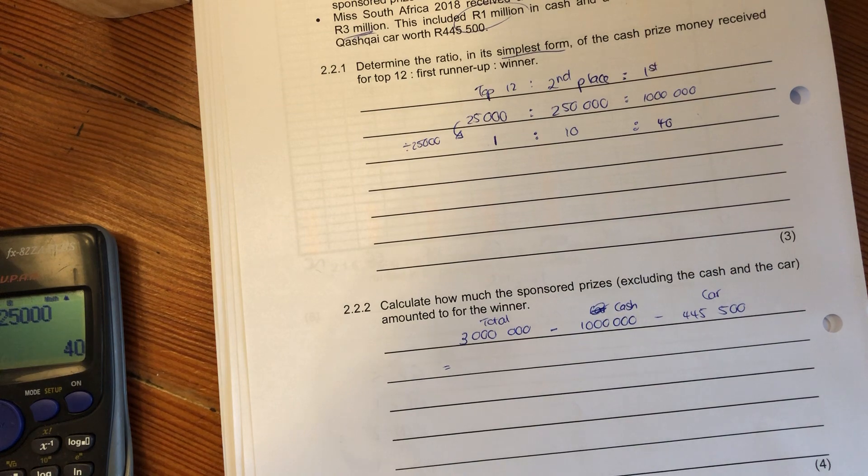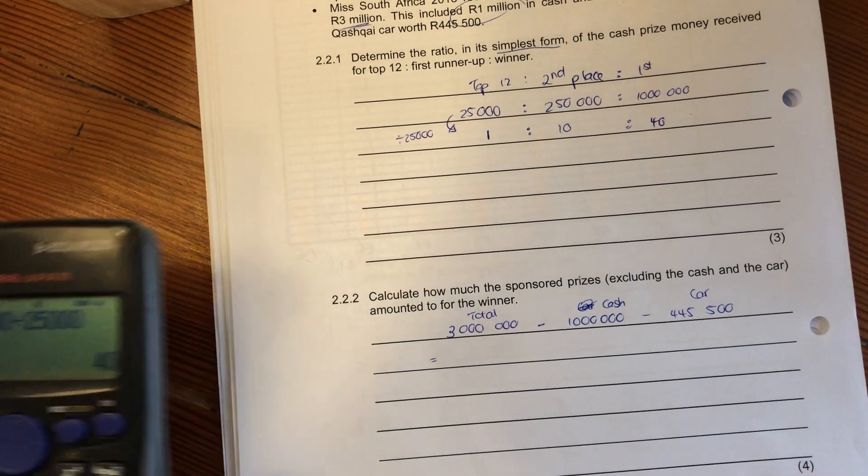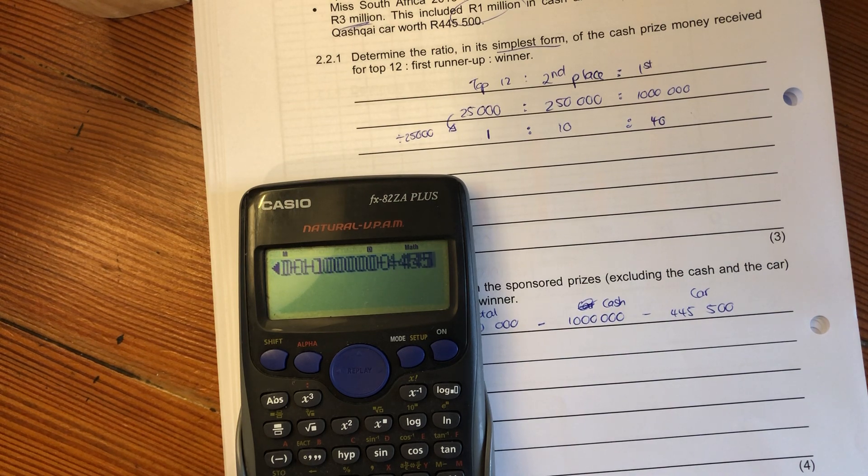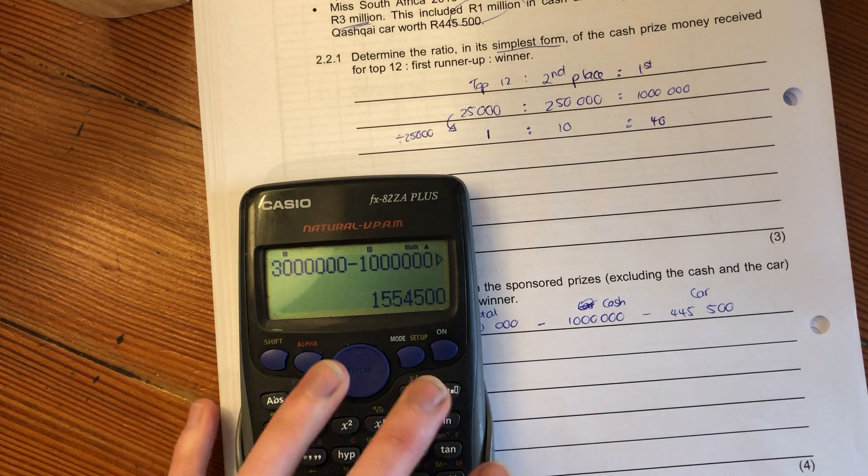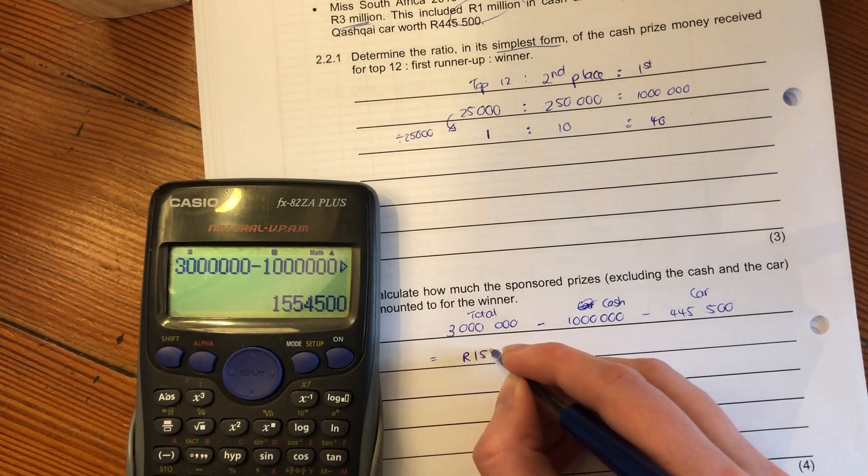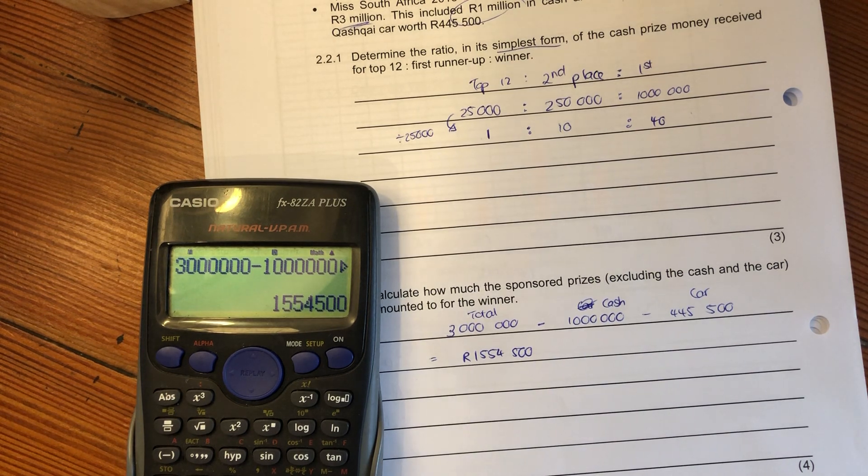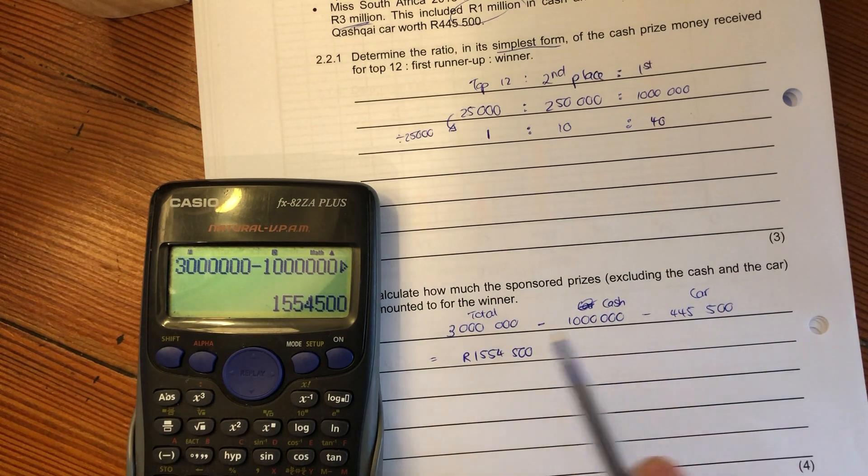If we put this into our calculator it will give us how much was in sponsored prizes. We say three million, put in the right number of zeros, take out a million which is the cash, and take out the car. This is R1,554,500 in sponsored prizes. This is just showing that you understand how the prize was split up.